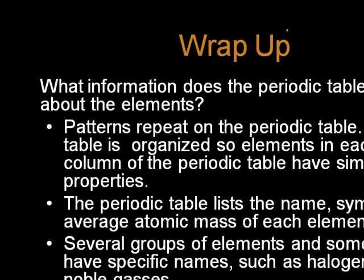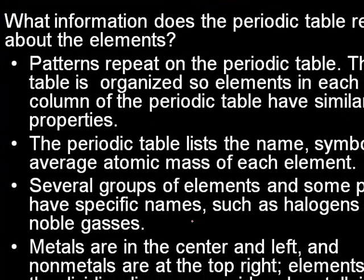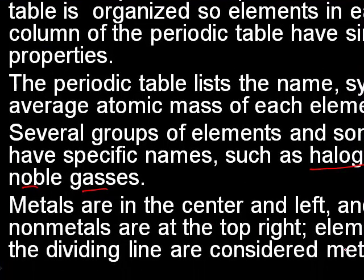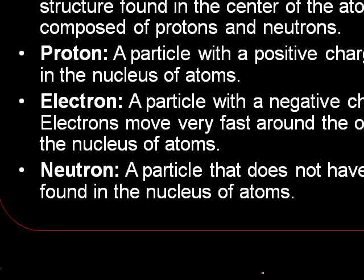Now the periodic table reveals a lot of patterns and similarities of the groups on the periodic table. Names, symbols, average atomic mass are all provided. Many of the groups of elements in some periods have specific names, such as halogens and noble gases, alkaline metals, alkaline earth metals, and so forth. Metals are at the center and the left, and non-metals are at the top right. Elements near the dividing line are considered metalloids.